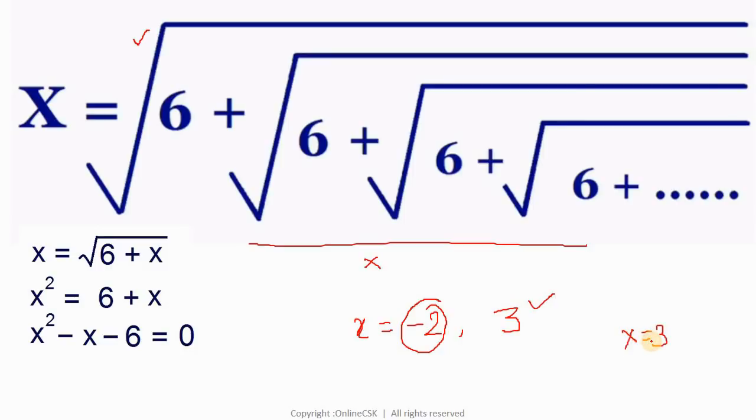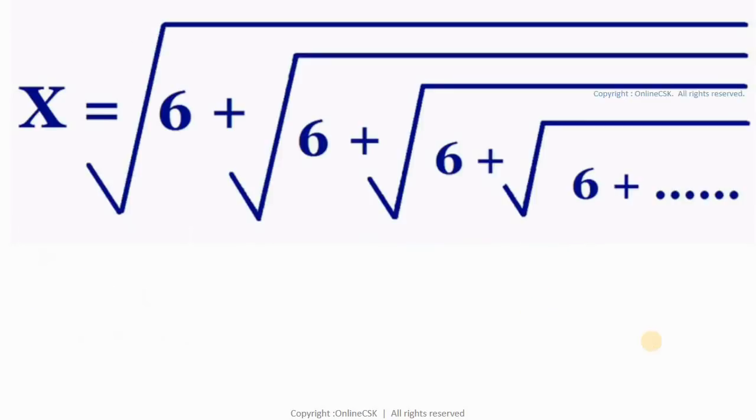My dear friends, now look at the same question in the shortcut way. First of all, there are some criteria. Look at 6. If I factorize this, 6 can be written as 2 into 3, right? If we have two factors which are consecutive and the multiplication of both numbers is equal to the same number, then only this shortcut will work.